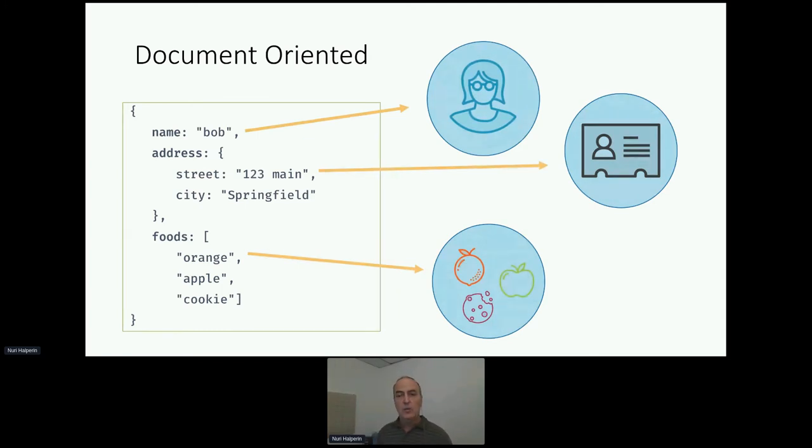And we have an address for this person, because we want to know where they live. And we want to know what foods they like. So we have an array of foods. And if we discover they like more foods, we can add to it, and less foods we can remove for it, and so forth. But you see that the encapsulation here is that our use case required, the workload said, I want to have a customer, I want to know where they live, and I want to know what foods they have. So I store it all together in one document.